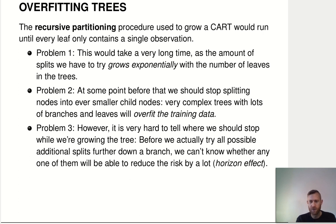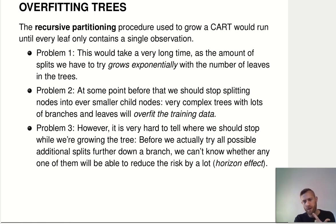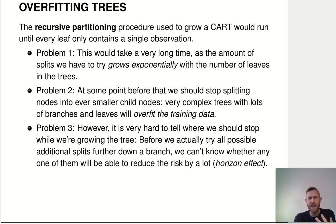So before we actually try building a tree, we don't know how well it will work — the so-called horizon effect. These are the three problems: Problem one, it takes a lot of effort. Problem two, it's not even worth the effort probably because we will do overfitting. And problem three, given the way that we construct this tree, we really have no way to know in advance when to stop building a tree and when to stop subdividing things into ever smaller nodes.